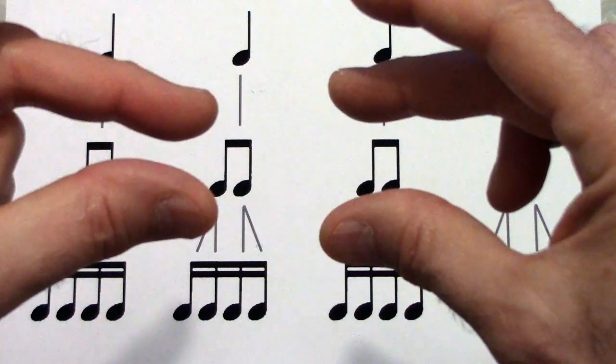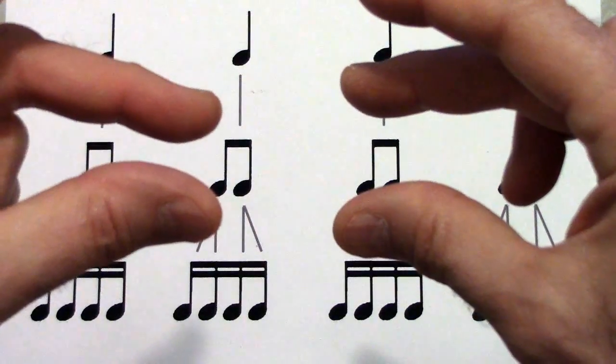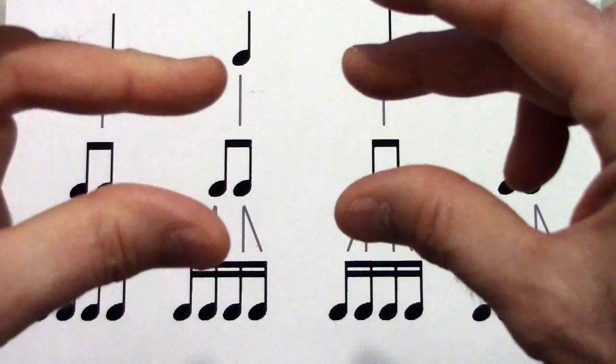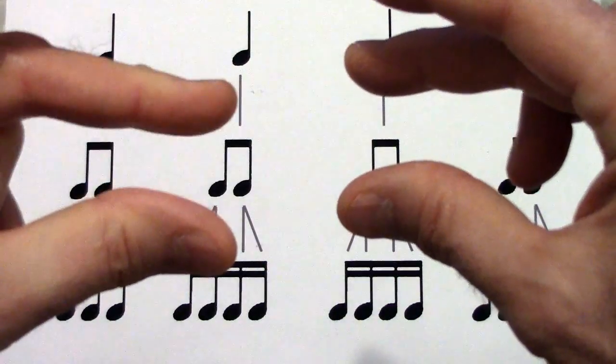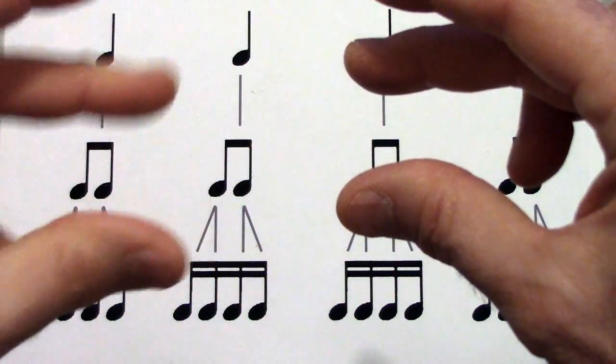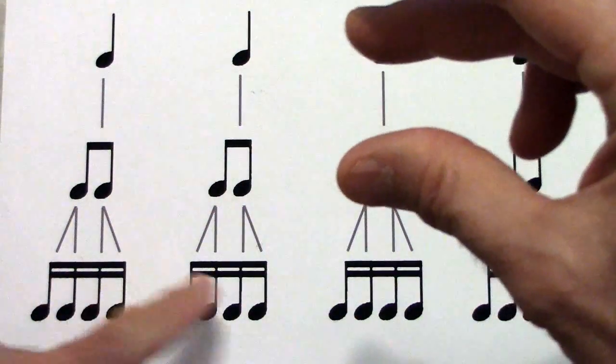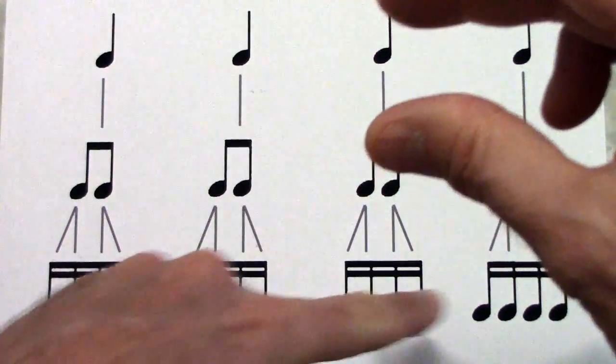Let's count in 16ths, okay? 1-E and a, 2-E and a, 3-E and a, 4-E and a, 1-E and a, 2-E and a, 3-E and a, 4-E and a, 1-E and a, 2-E and a, 3-E and a, 4-E and a.